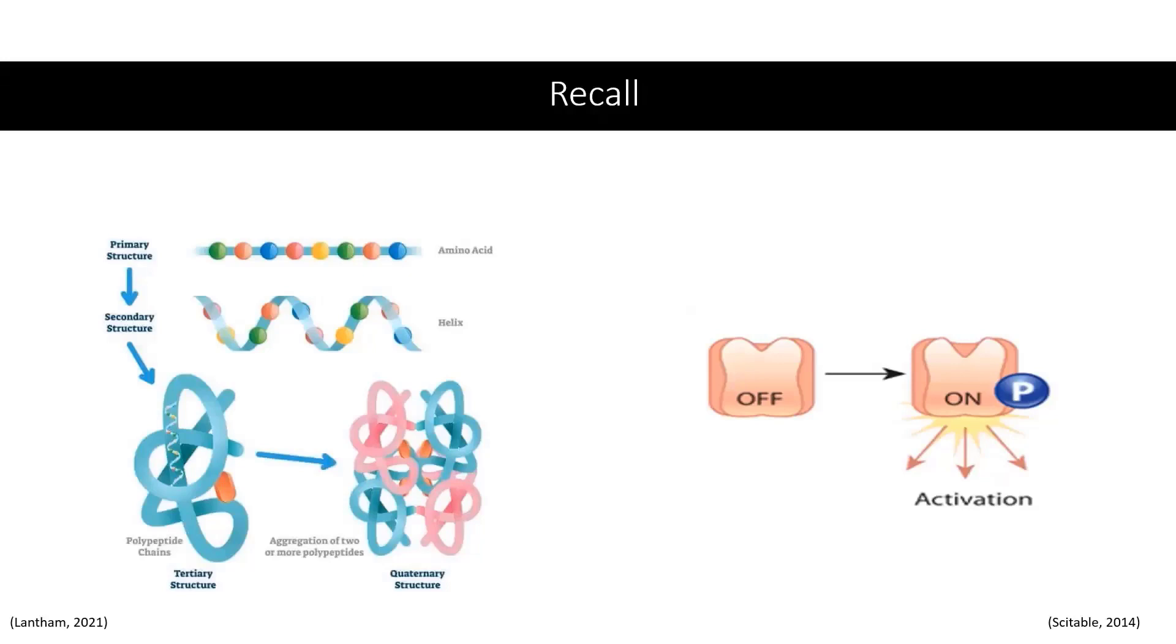Recall from our previous video that a protein molecule is a string of amino acids that has been folded into a functional form. Additionally, we discussed a type of post-translational modification called phosphorylation, which adds a phosphate group to a protein molecule to result in an action, such as activation. Now that we understand these concepts, we can discuss the process of mass spectrometry.